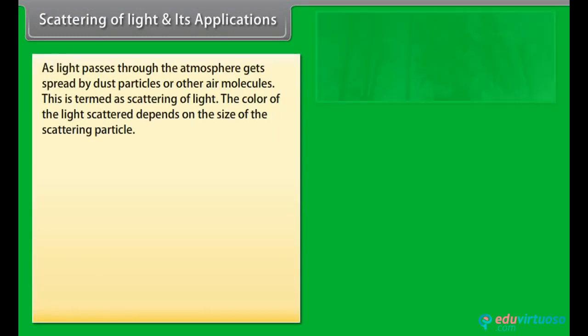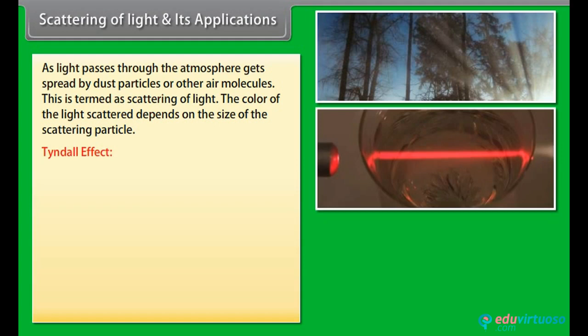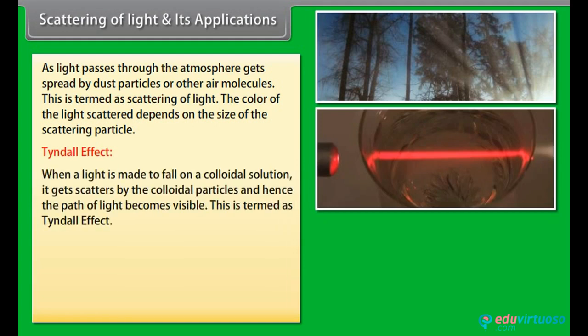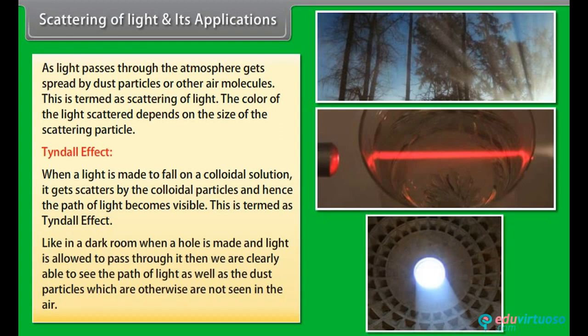Scattering of Light and Its Applications: As light passes through the atmosphere, it gets spread by dust particles or other air molecules — this is termed scattering of light. The color of light scattered depends on the size of the scattering particle. Tyndall Effect: when light falls on a colloidal solution, it gets scattered by the colloidal particles and the path of light becomes visible. For example, in a dark room when light is allowed to pass through a hole, we can clearly see the path of light as well as the dust particles which are otherwise not visible.